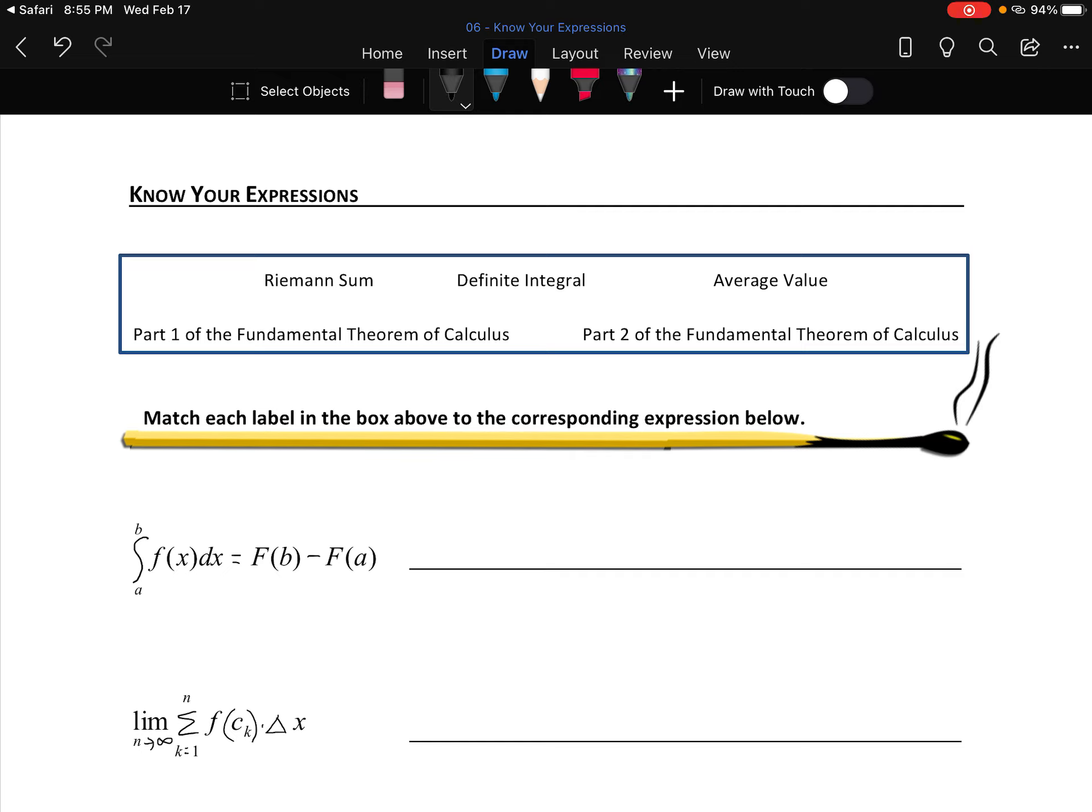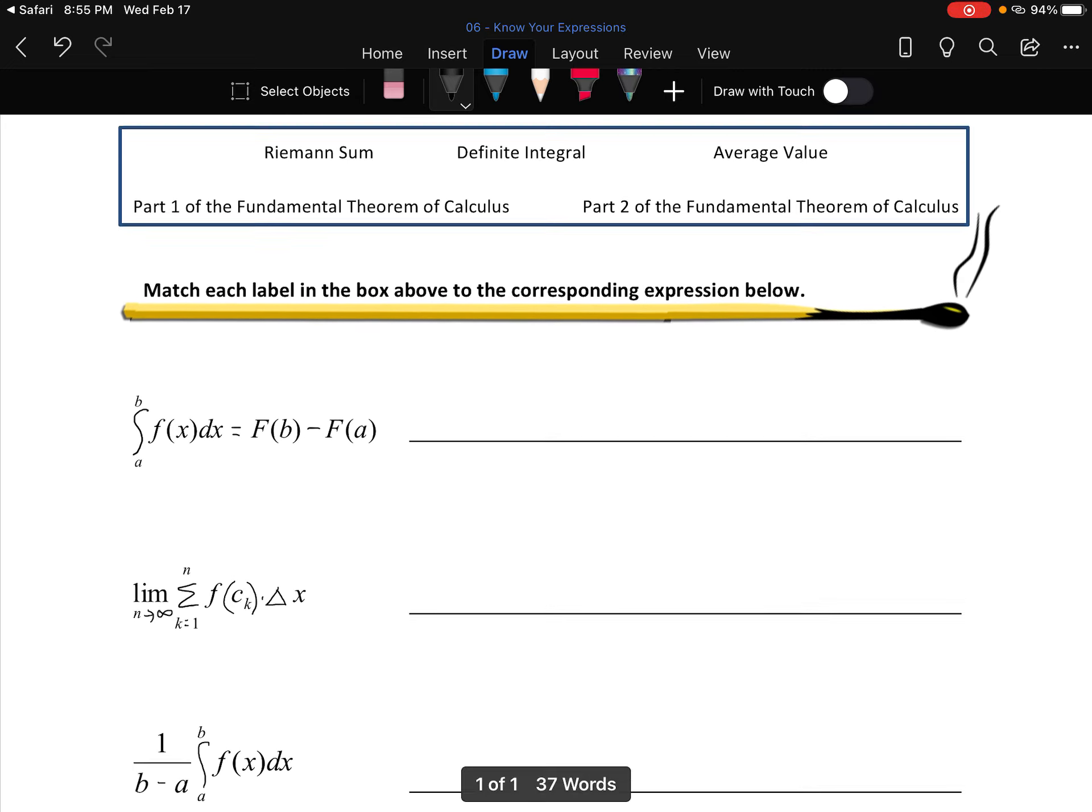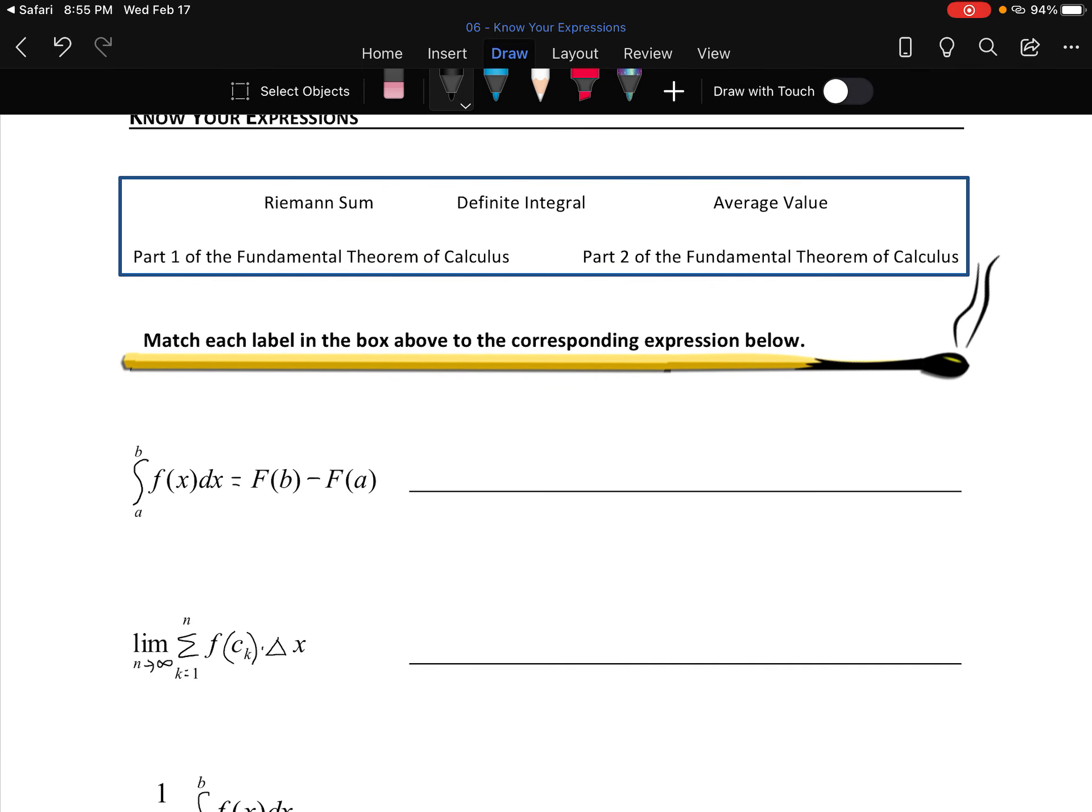We're looking to match up here. We want to know the expression for Riemann sum, definite integral, average value, part one of the fundamental theorem of calculus, and part two of the fundamental theorem of calculus, which serves as a great introduction to working through examples on part one and part two.